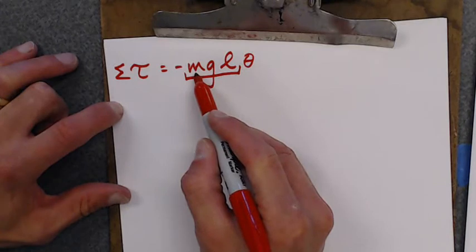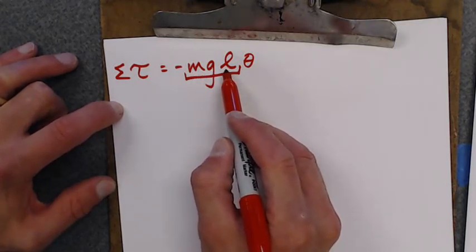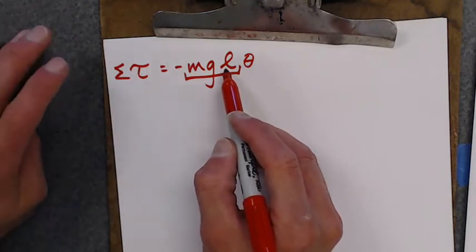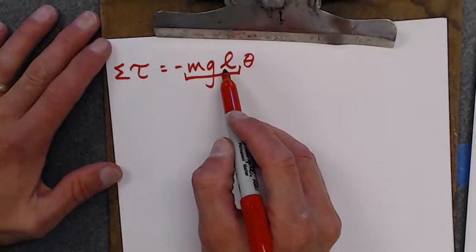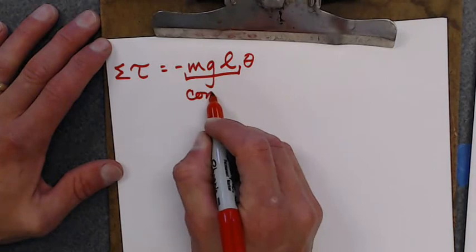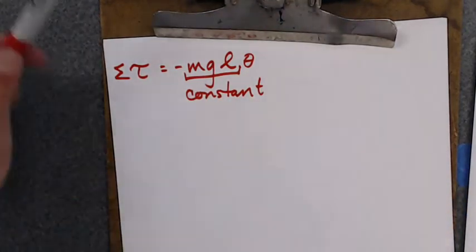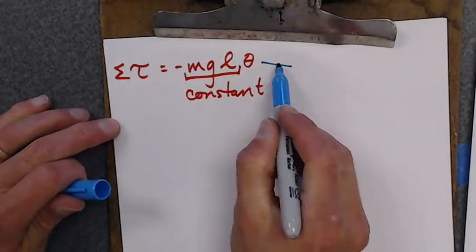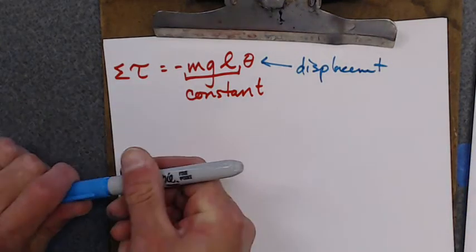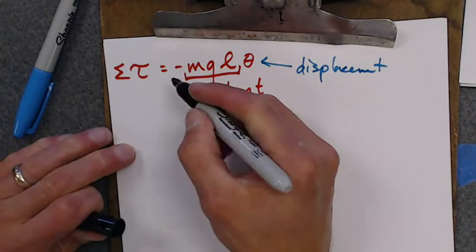The mass depends on what I'm hanging off the end. G depends on what planet I'm on. L is the length of the string, or in this case, the length to the center of the mass. All of those only depend on your setup. They're not going to change. They're a constant. And now I have this thing over here, I have this theta. That's my displacement.